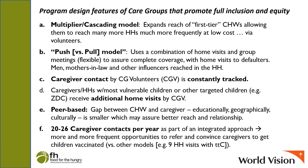Let's talk about some of the program design features of Care Groups that promote full inclusion and equity. To start with, it's a multiplier and cascading model. It expands the reach of first-tier community health workers, allowing them to reach many more households more frequently at low cost via volunteers. It's a push rather than a pull model. It uses a combination of home visits and group meetings, which are flexible, to assure complete coverage with home visits to defaulters.